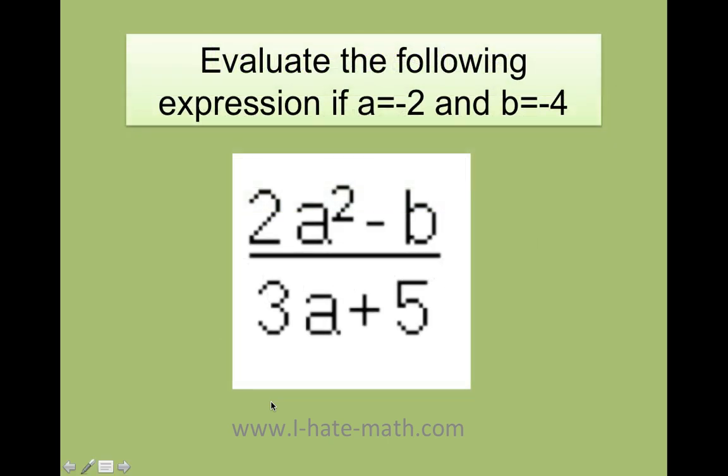Let's do another example. So look what we have here. We have another expression, but this time it's a fraction. So how do I do it? Well, they tell me that a equals negative 2 and b equals negative 4. Awesome. Let's go ahead and do it. So 2 times negative 2 squared minus, did you see how I'm putting parentheses? That way I don't forget that I have to work with my signs. 3 times negative 2 plus 5.